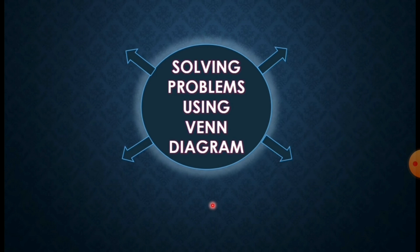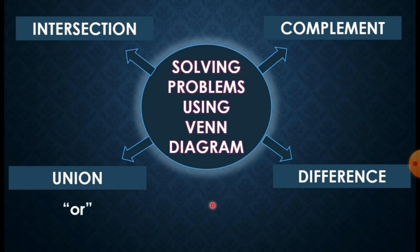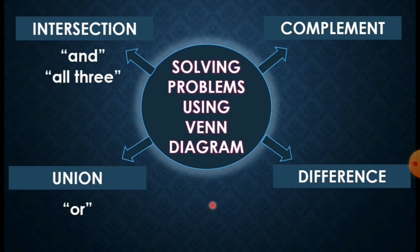In solving problems using the Venn diagram, we have to familiarize the words or terms used para mas madaling maintindihan kung anong set operation ang gagamitin. There are four terms: union, intersection, complement, and difference. For union, if merong 'or' sa word problem, it means union yung set operation na gagamitin natin. If 'and' or 'all three' yung nakita ninyo sa word problem, so this is an intersection.